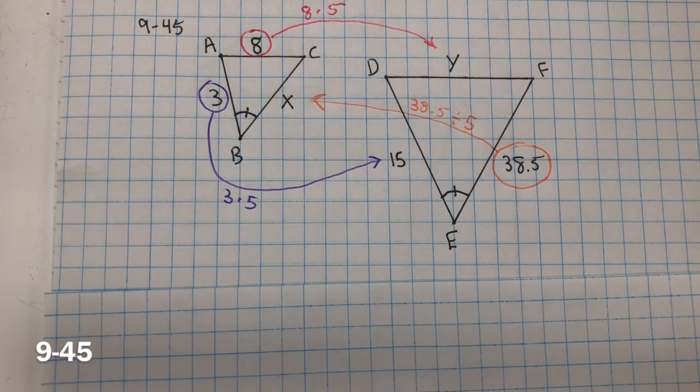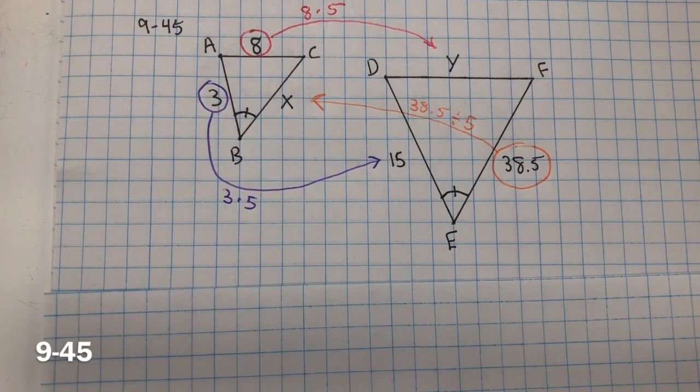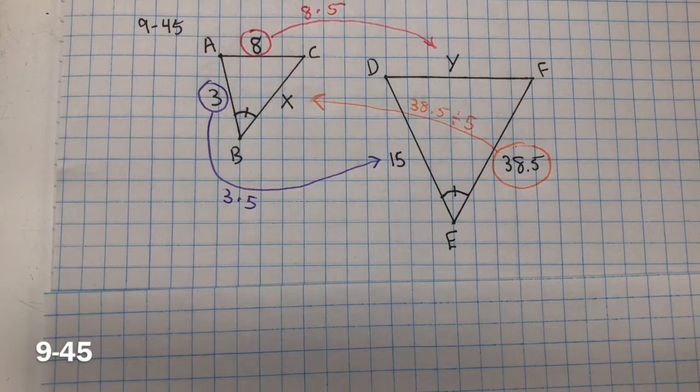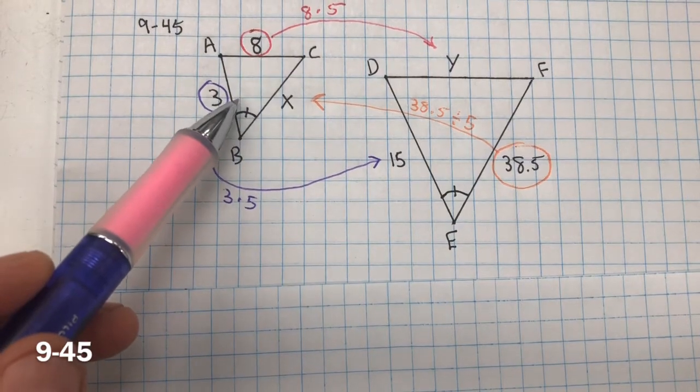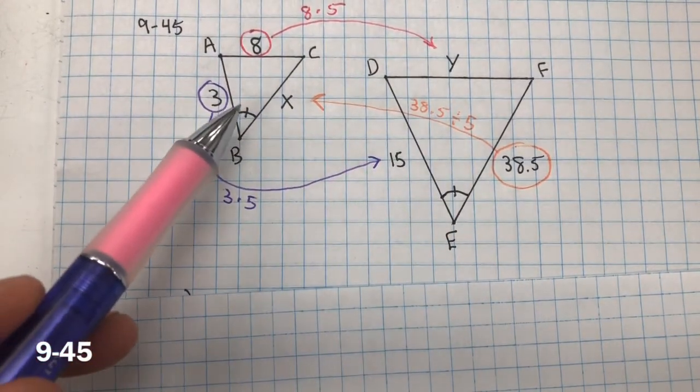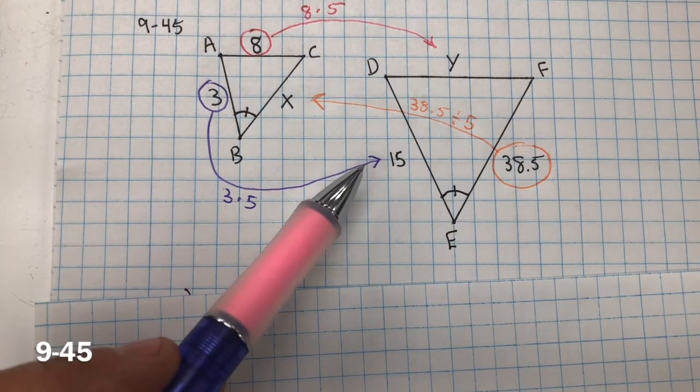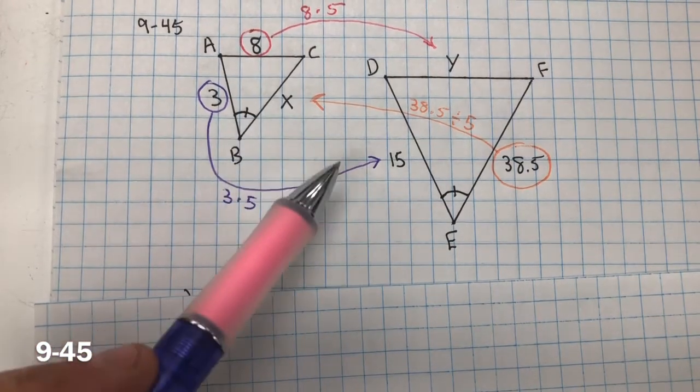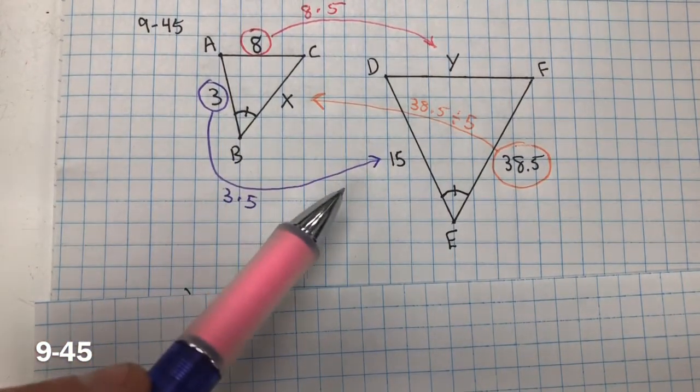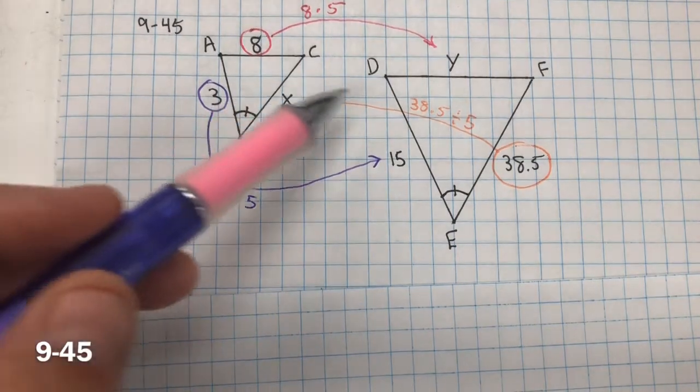In problem 945, triangle ABC is similar to triangle DEF. First, we need to find the scale factor from triangle ABC to triangle DEF. So here's triangle ABC, and we want to find the scale factor from this triangle to DEF. You notice that it's increasing in size, so we know that since it's increasing in size, it's going to be greater than 1. The scale factor of 1 would keep it the same size. The scale factor less than 1 would decrease the size. So since we're going from this triangle to this triangle, from small to big, we know it's going to be increasing in size.